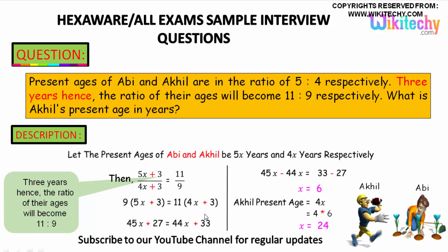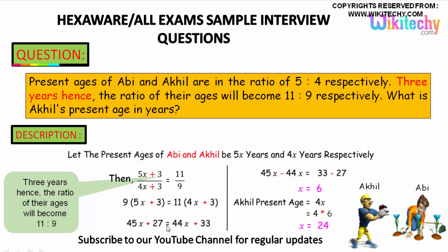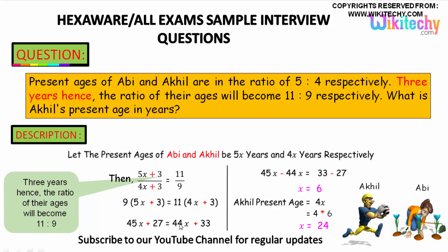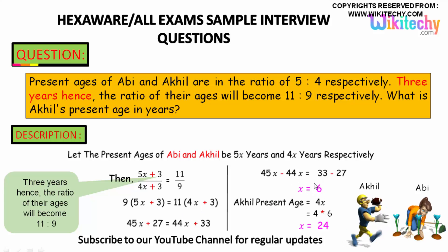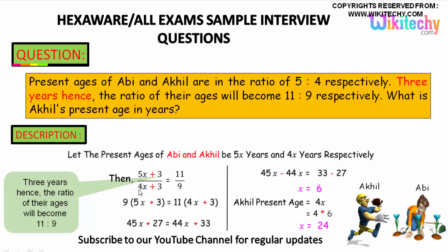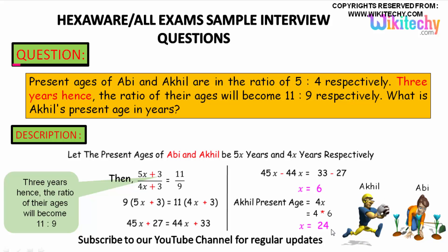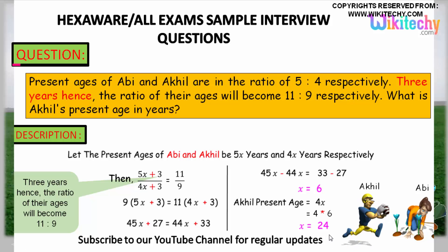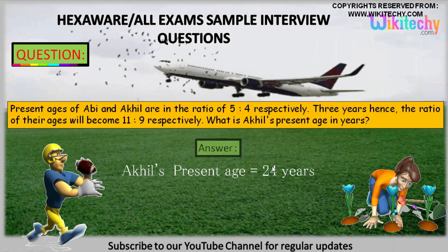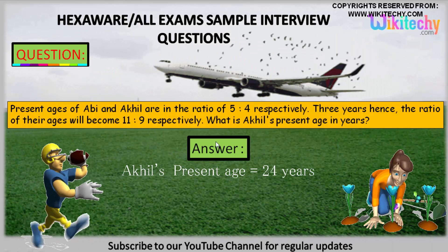Solving: 45x minus 44x gives x = 33 minus 27, so x = 6. Therefore Akil's present age is 4x = 4 into 6, which is 24. The final answer is 24 years.